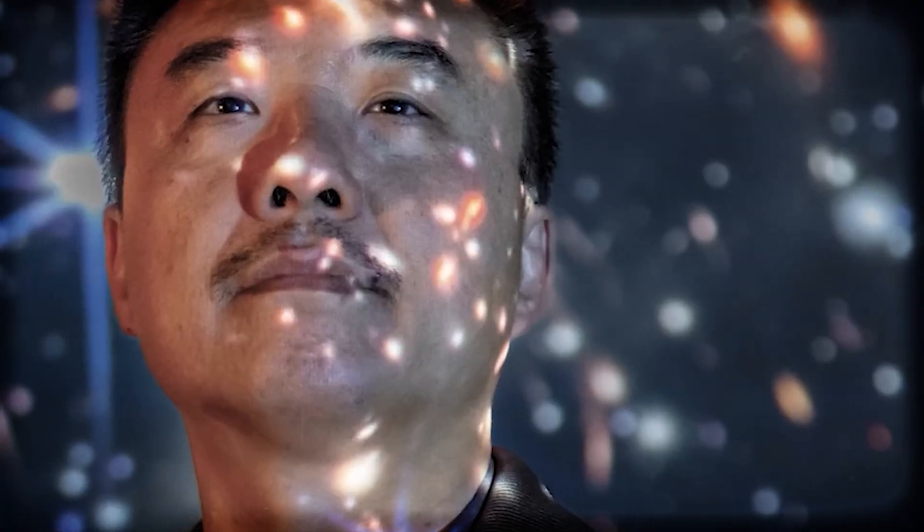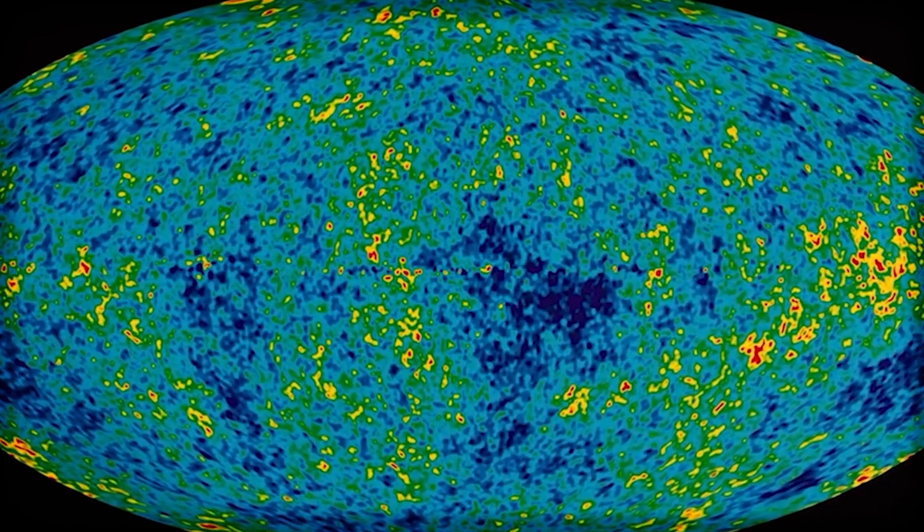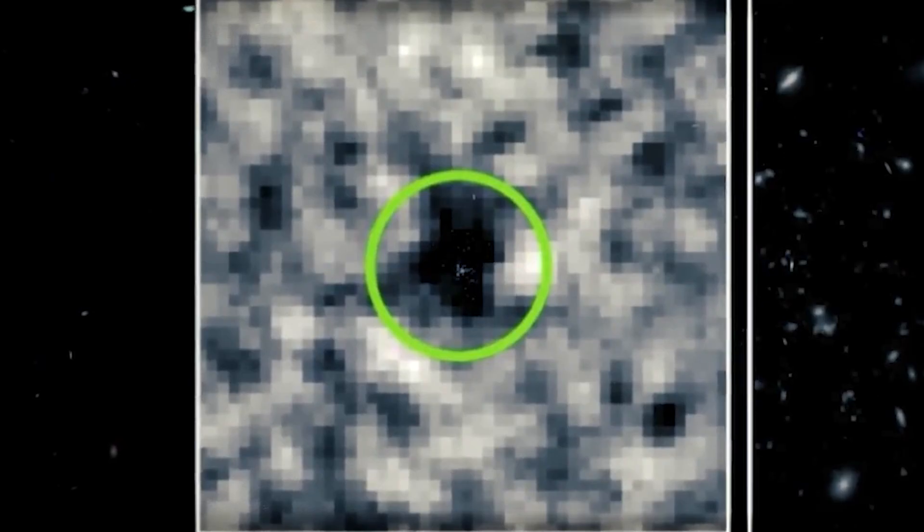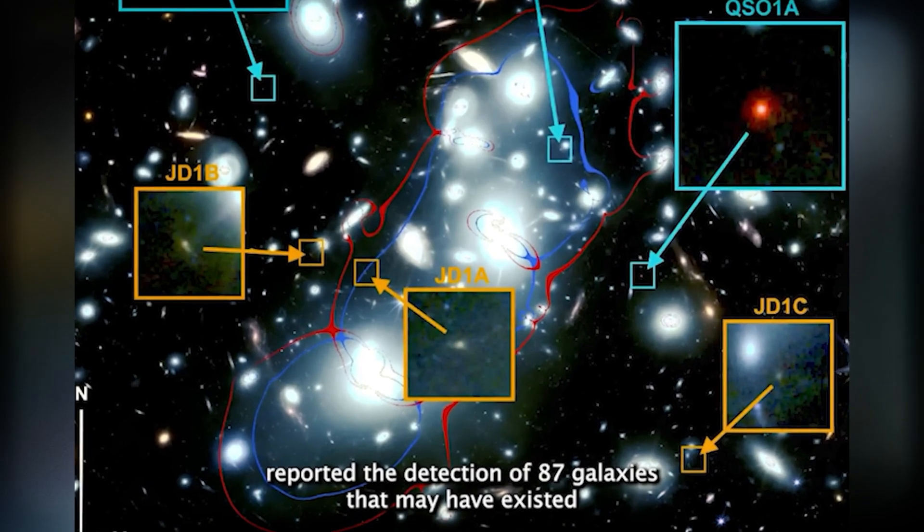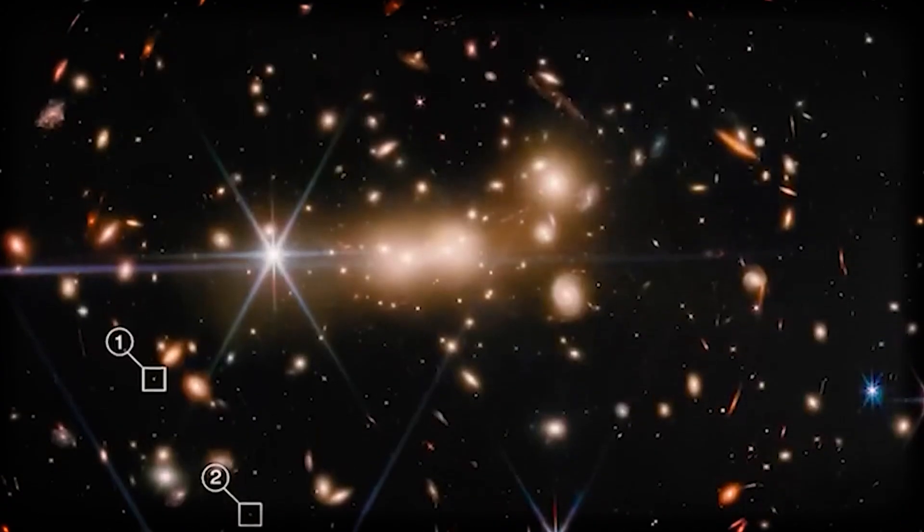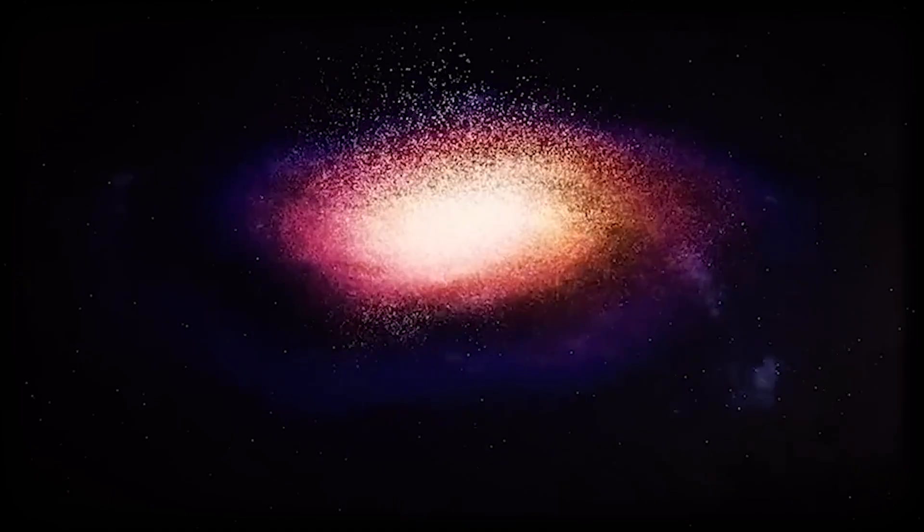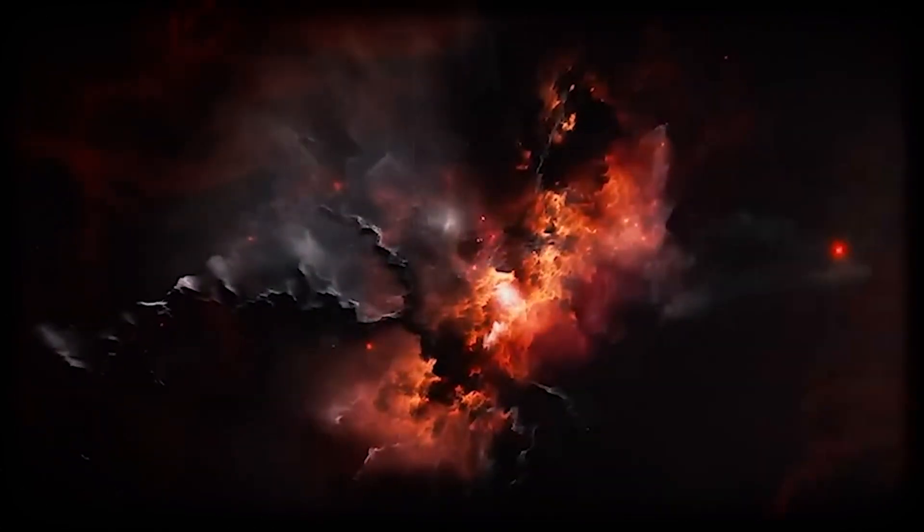But hold on, because here's where things start to break your brain. There's a limit to how far we can see. A kind of cosmic boundary. It's called the Hubble Sphere. Within this invisible shell, galaxies are moving away from us slower than the speed of light. But beyond it, galaxies are receding faster than light itself. Wait, what? That sounds like we've hit a wall. Because if something's moving away faster than light, logic says its light should never reach us, right? And yet, somehow, it does.